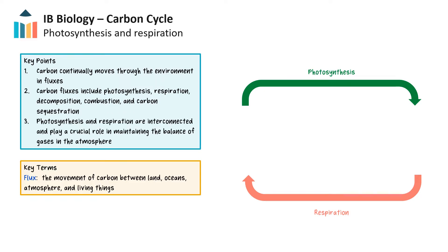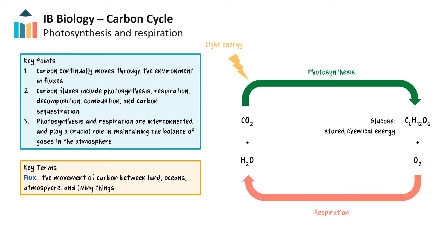The processes of photosynthesis and respiration are interconnected and play a crucial role in maintaining the balance of gases in the atmosphere. Photosynthesis, carried out by plants and other photosynthetic organisms, converts carbon dioxide and water into glucose and oxygen, using sunlight as the energy source. Meanwhile, respiration, performed by all living organisms including plants, breaks down glucose, releases carbon dioxide and water, while capturing energy for cell metabolism as ATP. As the products of one process are the reactants of the other, the processes of photosynthesis and respiration work in tandem to ensure atmospheric oxygen and carbon dioxide levels remain relatively stable.